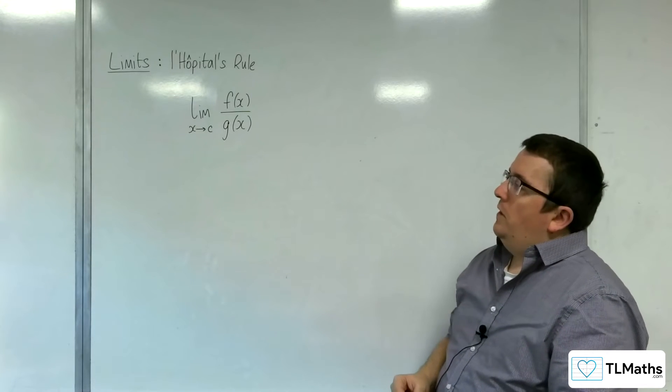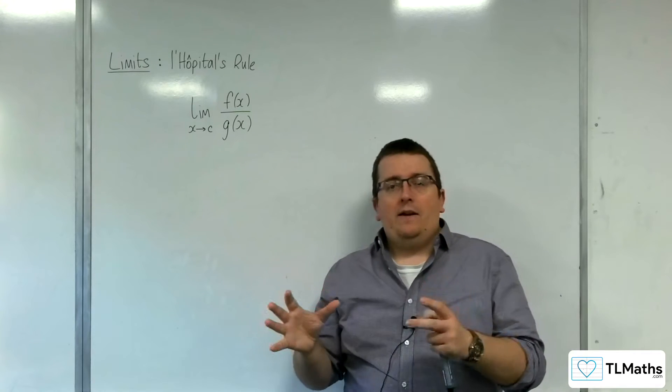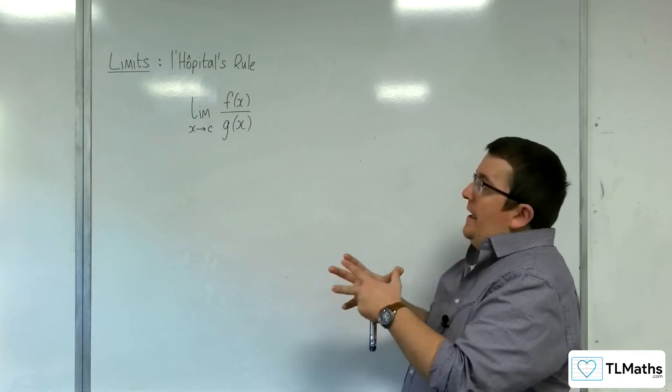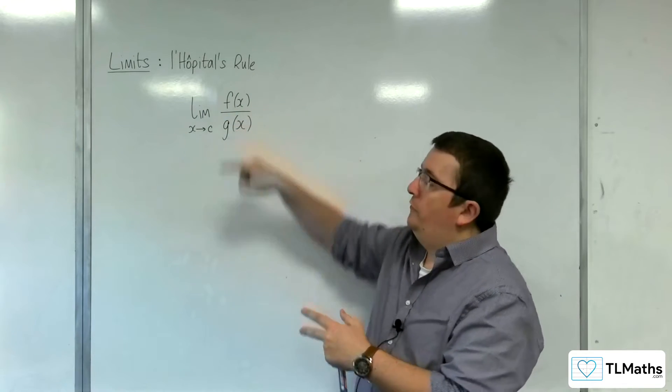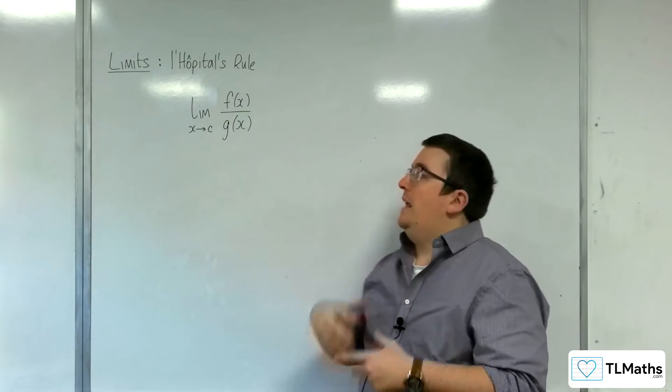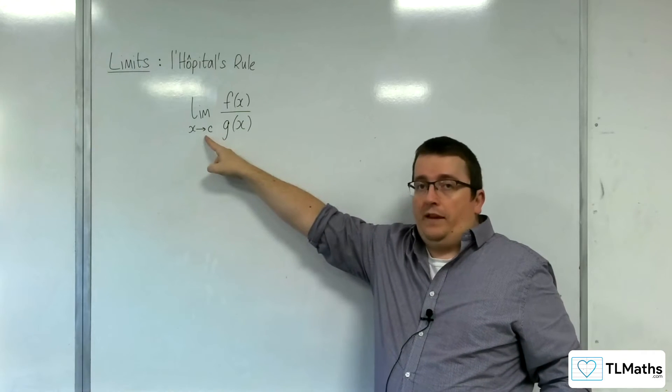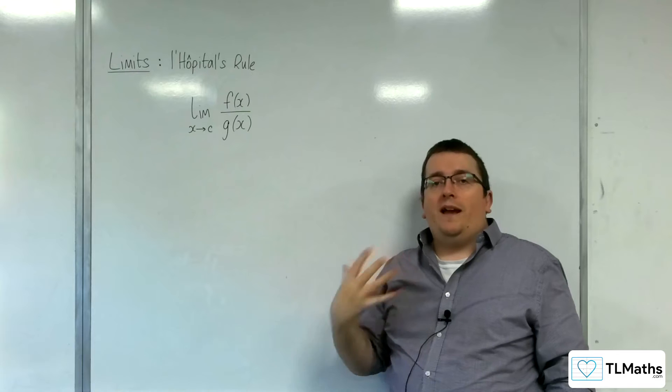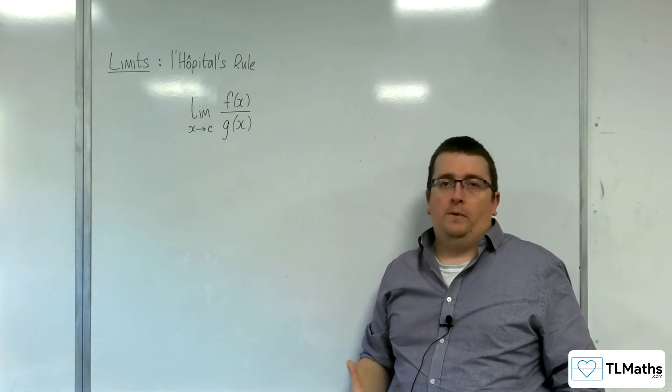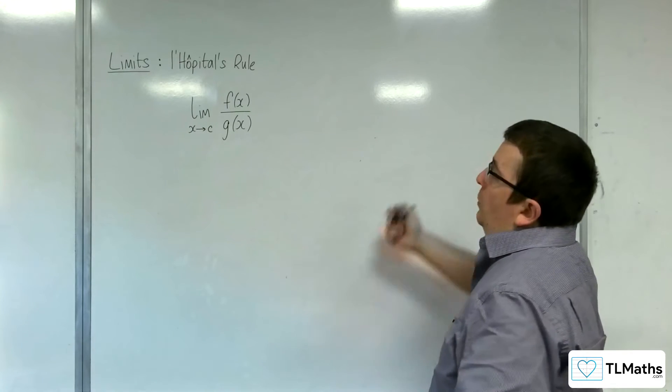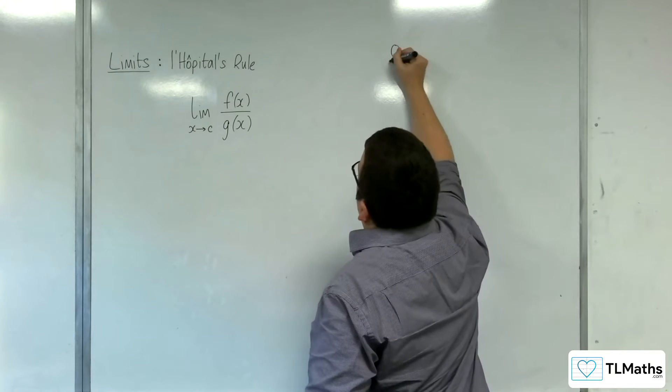So, the idea is that you have an expression here, you're trying to find the limit of, such that if you evaluated it at x equals c, then you would have an indeterminate form. By that, I mean you'll be getting something like 0 over 0.